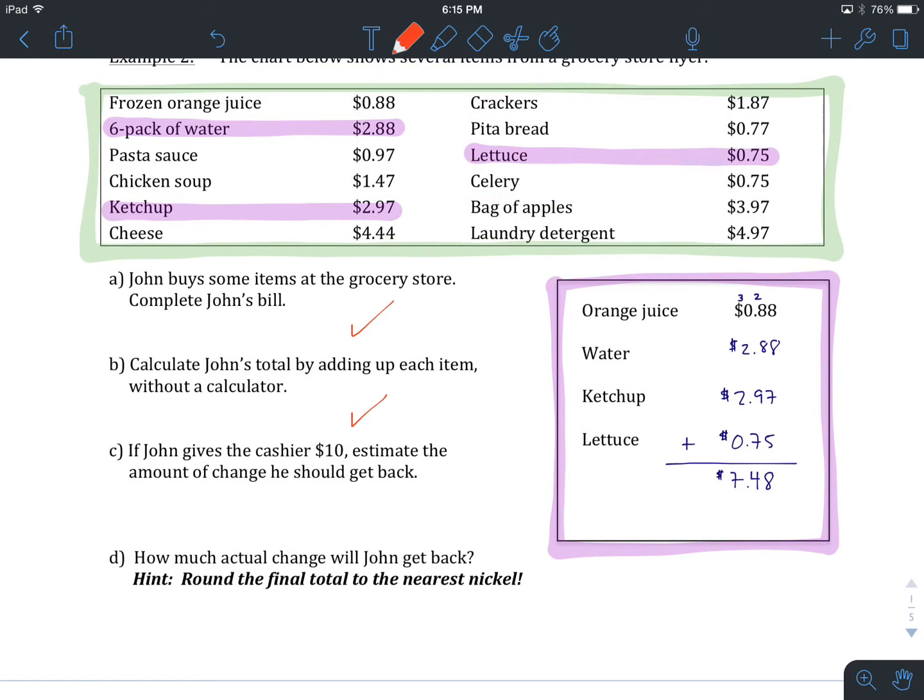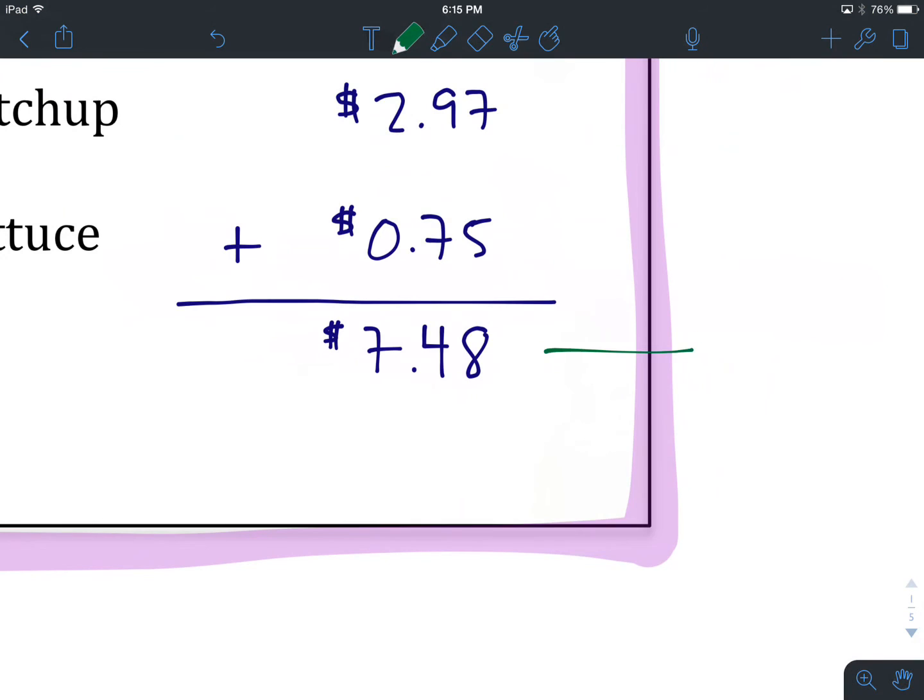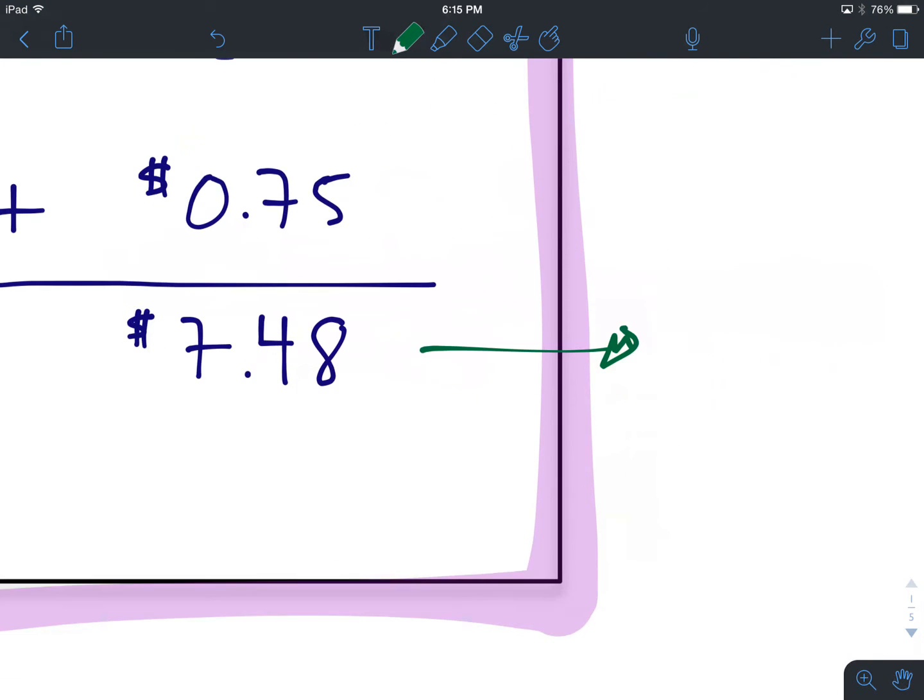So, if John gives the cashier $10, estimate the amount of change that he should get back. If we are going to estimate, what we want to do is round what our actual total is to the nearest dollar. So, $7.48. I'd like you now to hit pause. Round that to the nearest dollar when you got it. Come on back.